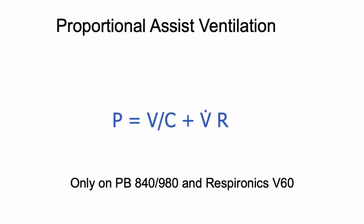Another spontaneous breathing mode is proportional assist ventilation, which uses positive feedback control — if the patient demands more ventilation, the ventilator applies more pressure. Like many of these modes, it's only available on some ventilators: proportional assist ventilation is only available on Puritan Bennett ventilators for invasive ventilation and the Respironics ventilator for non-invasive ventilation.